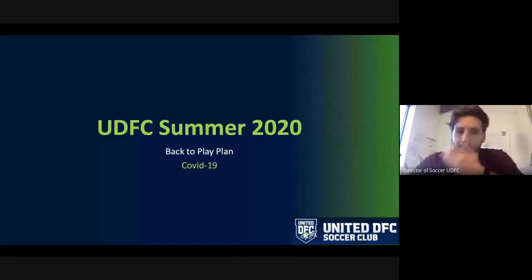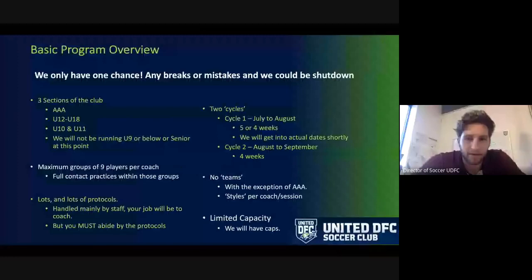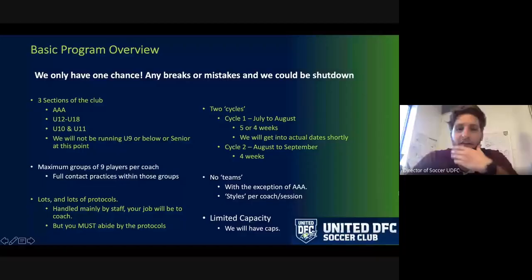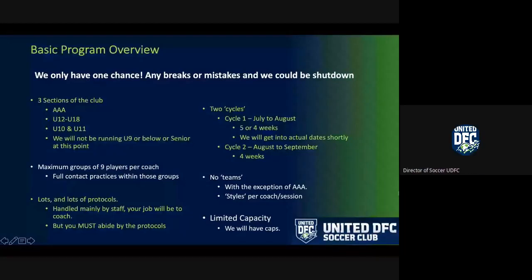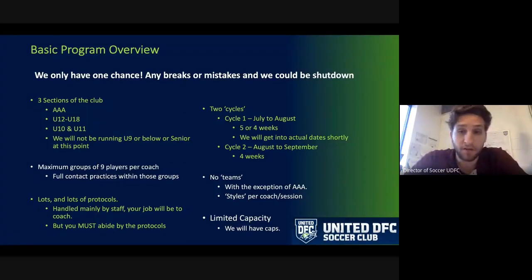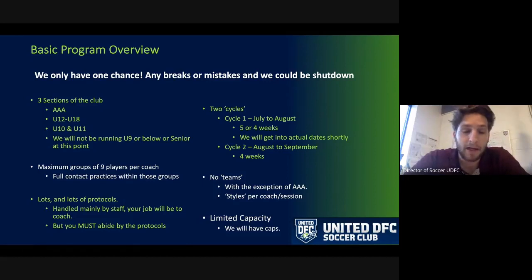So, basic overview to start. These are just the real basics — I want to get you thinking about some of this stuff before we get into the details. We split the club into three parts for this: the Triple-A's, U12 to U18s, and then U10s and U11s. At the moment and for the first cycle, we're not going to run U9s or below, and I'll get into the reasons for that a little bit later. We're also not going to do the seniors just yet, but there are plans for both of those pretty soon.